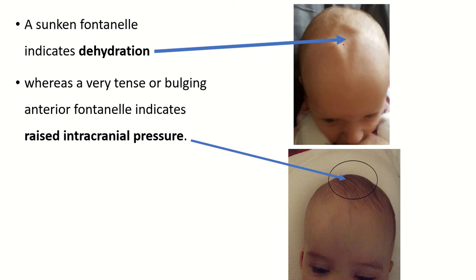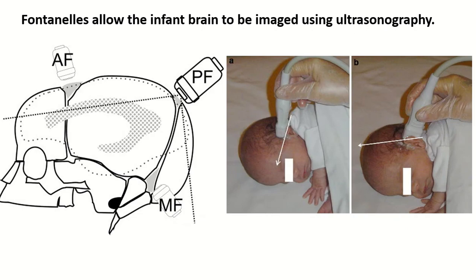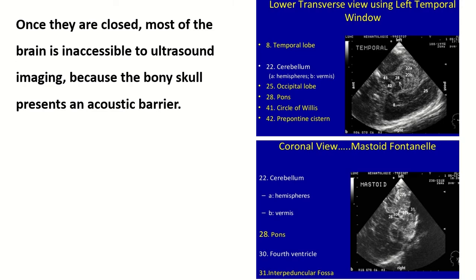A sunken fontanelle indicates dehydration and a bulging fontanelle indicates raised intracranial pressure. Fontanelle allow the infant brain to be examined using ultrasonography. Once they are closed, most of the brain is inaccessible to ultrasound imaging because the bony skull presents an acoustic barrier.